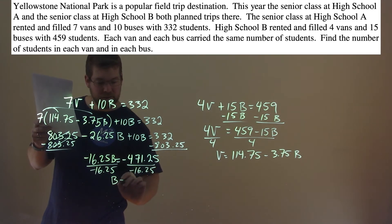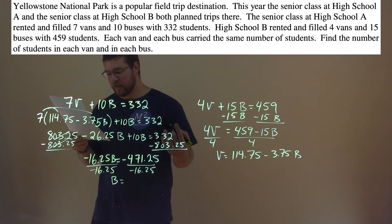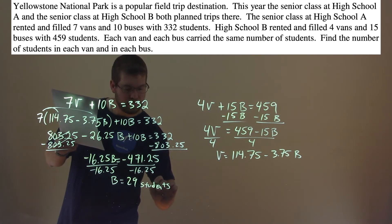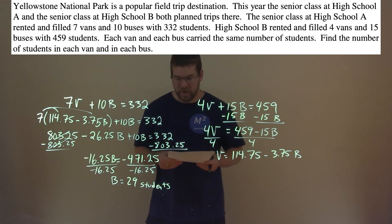And b equals, well, the negatives cancel out to be a positive, and this actually comes out to be 29. So 29 students are on each bus.